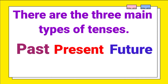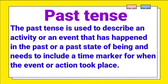There are three main types of tenses: past, present, and future. The past tense is used to describe an activity or an event that has happened in the past, or a past state of being, and needs to include a time marker for when the event or action took place.